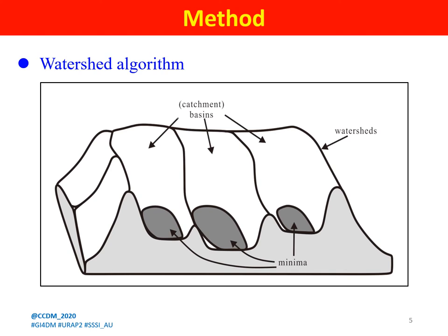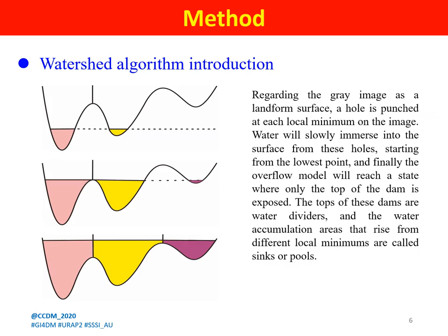The second part is the method. This is a schematic diagram of the watershed algorithm. Regarding the gray image as a terrain surface, a hole is punched at each local minimum on the image. We can see that water will slowly immerse into the surface from each hole, starting from the lowest point. Finally, the overflow model reaches a state where only the top of each basin is exposed. The tops of these basins are water dividers, and the water accumulation regions rising from different local minima are called catchment basins or pools.